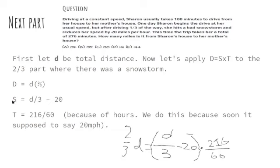And then the speed is equal to d divided by 3 minus 20, because this is the normal speed, and then minus 20 because of the snowstorm. And then the time is equal to 216 divided by 60 because of hours, and we do this because soon it's supposed to say 20 miles per hour.